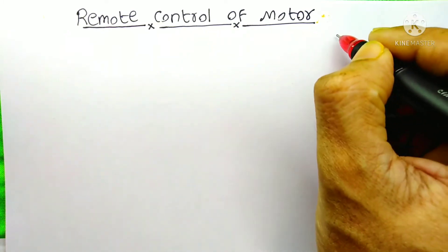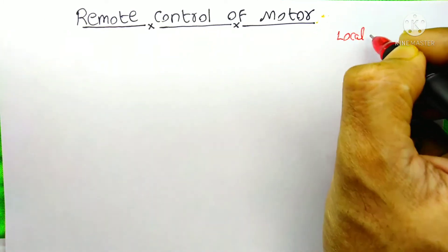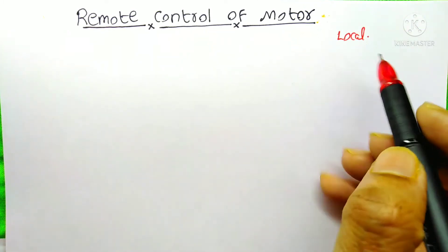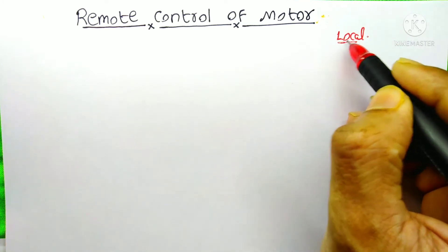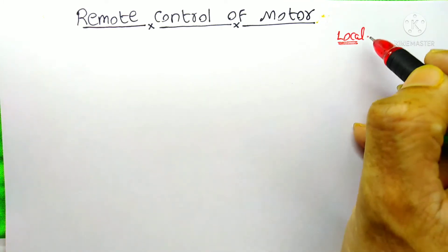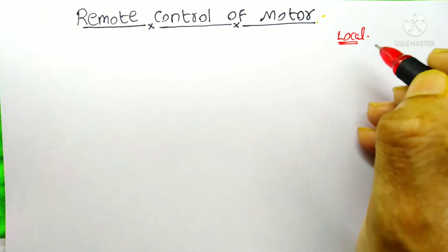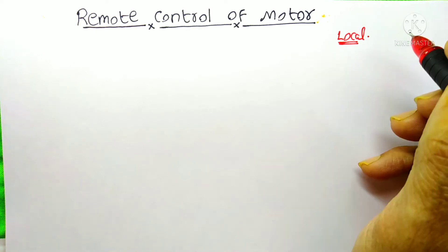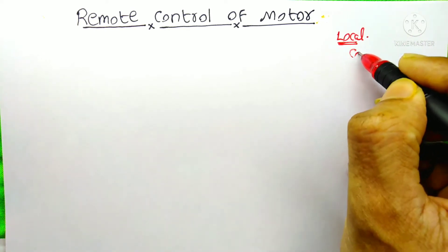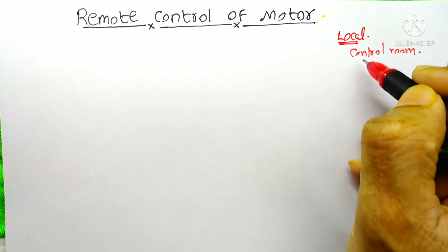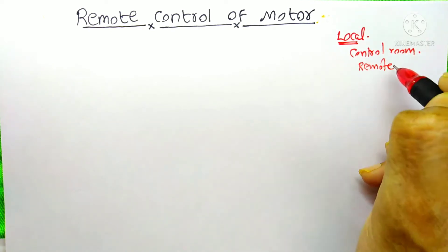So first of all, I want to tell you about what is the local control of motor. Suppose if the control of the motor is located just beside the motor, we can call it as local control. Suppose if the control is far away from the motor, if the control is in your control room, then we can call it as a remote control.